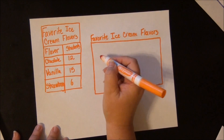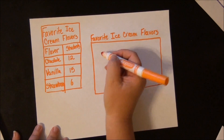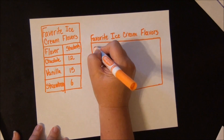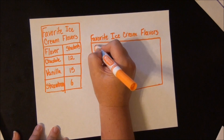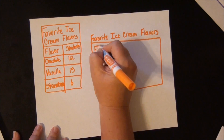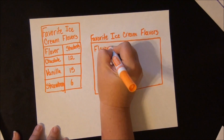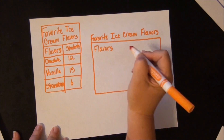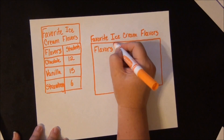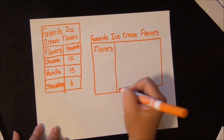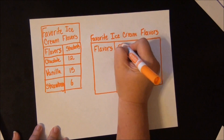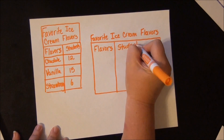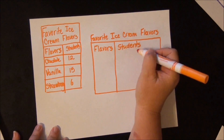Now I have three favorite ice cream flavors, so I'm going to label my columns. Here's where I'm going to write my flavors, just like I did here — flavors. And then I'm going to write students, because the picture we put in there is going to represent students who like those flavors.